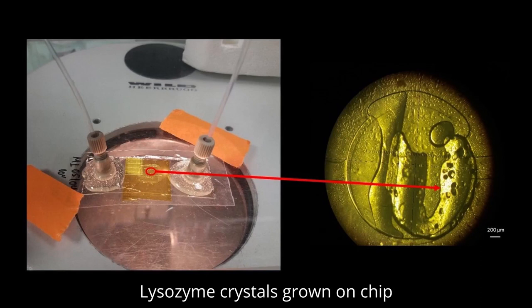On-chip crystallization also eliminates the manual harvesting of the fragile protein crystals, frequently applied in combination with cryocooling during conventional crystallography experiments.